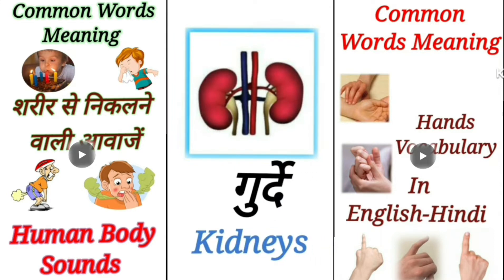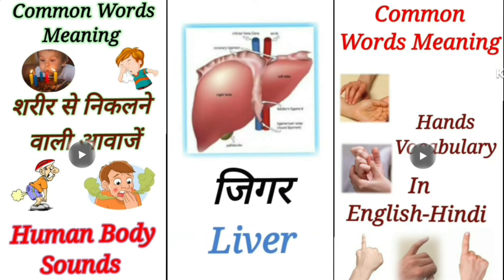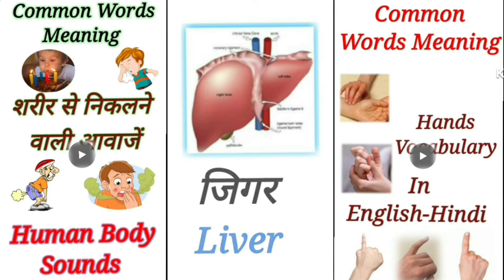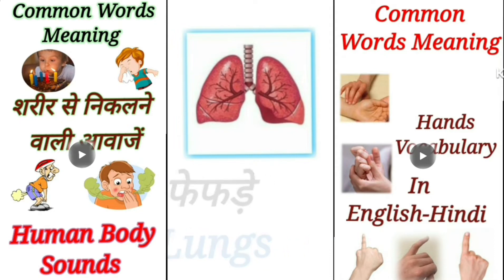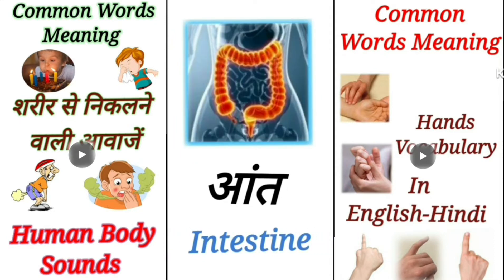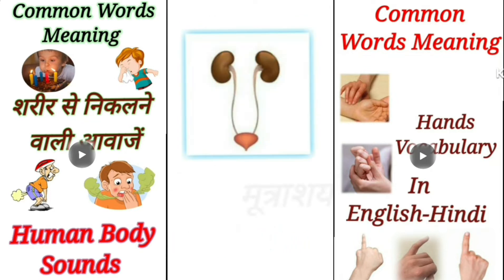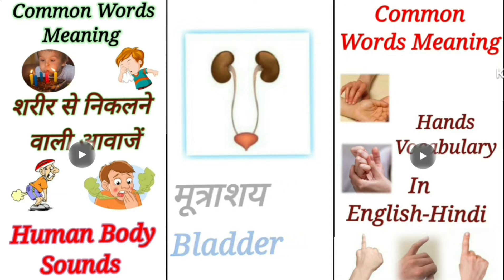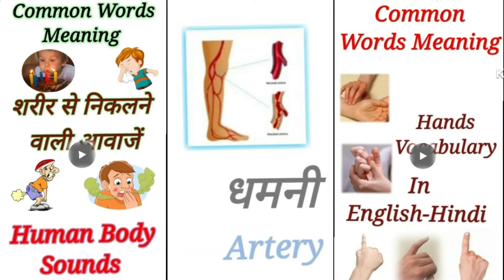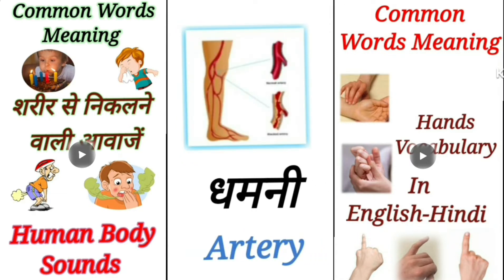Gurde – Kidneys. Jigar – Liver. Fafde – Lungs. Aat – Intestine. Mutrashe – Bladder. Dhamni – Artery.